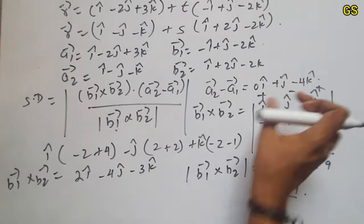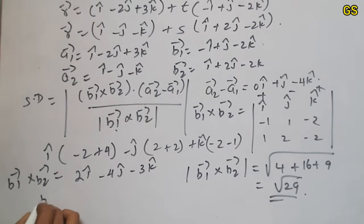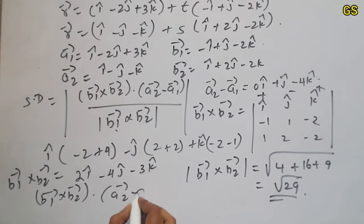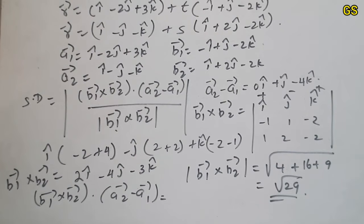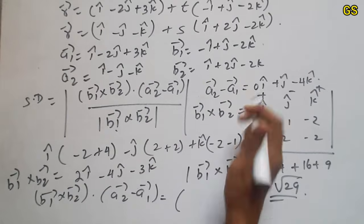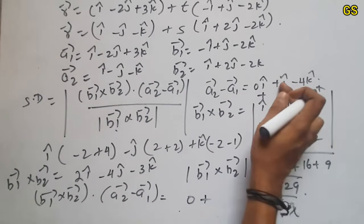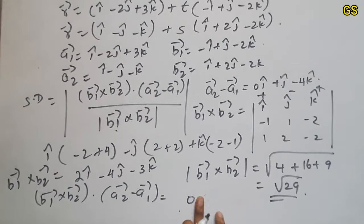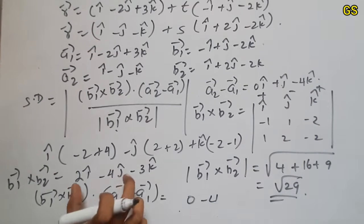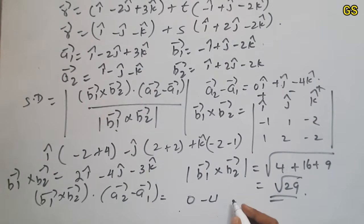So b1 cross b2 dot product of a2 minus a1. So b1 cross b2, 2 into 0 is 0. Plus minus 4 into plus 1 is minus 4. Next k, minus 3, minus 4, so plus 12. 12 minus 4 is 8.